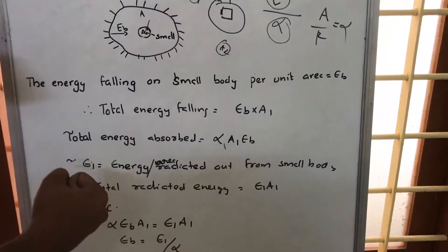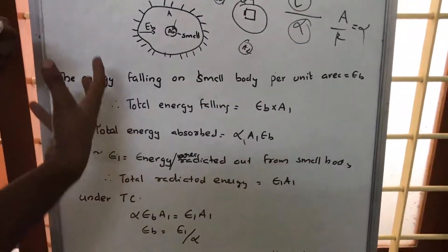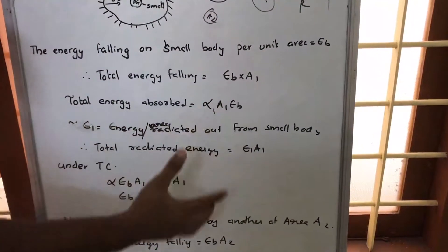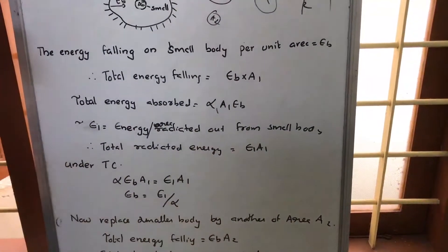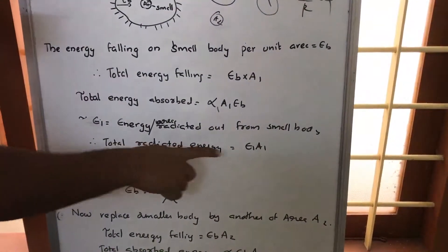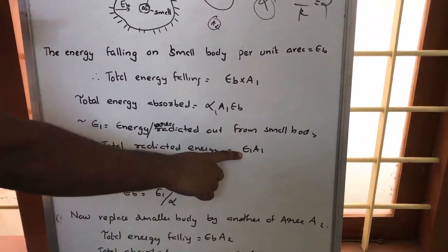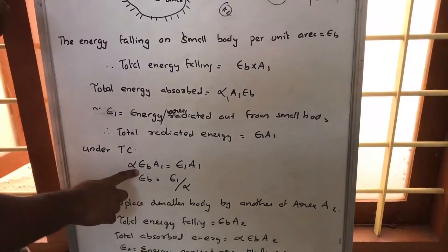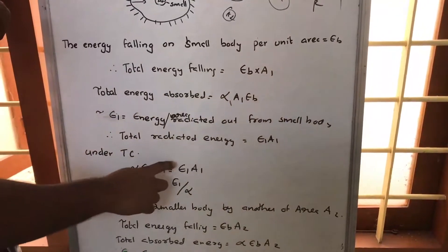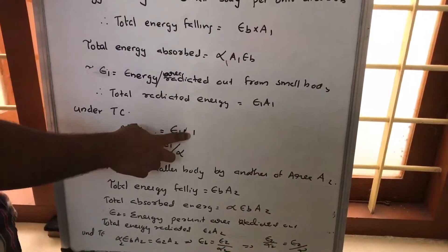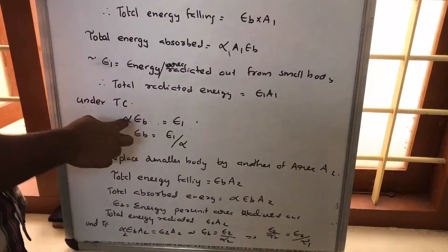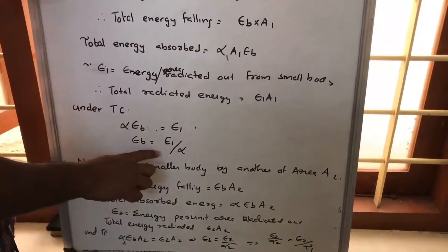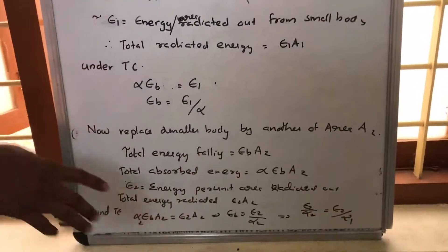If it is under thermal equilibrium, the energy absorbed — alpha1 times A1 times Eb — will be equal to the energy radiated out, which is E1 times A1. So E1 times A1 equals alpha times Eb times A1. The A1 terms cancel, and we conclude that Eb equals E1 divided by alpha1.